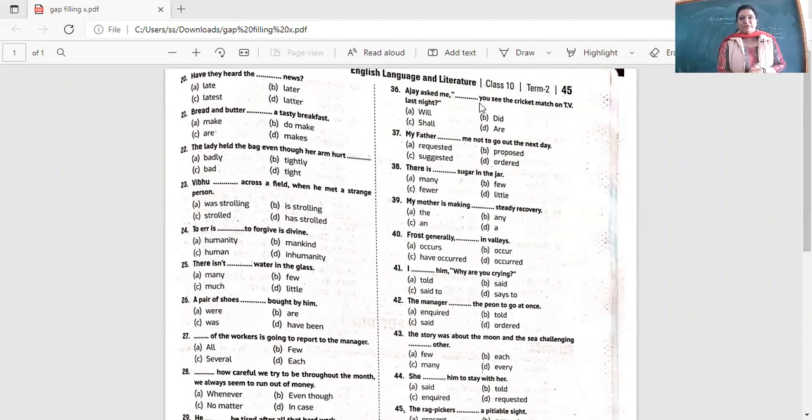Vibhu dashed across the field when he met a strange person. Vibhu dashed across a field when he met a strange person. Yeah, so when one thing is going on, another happened. So Vibhu was strolling. Vibhu was strolling. Give me your yes or no response if you got the answer right. Is strolling? No. Vibhu was strolling when he met. He met. He met. It's what it means.